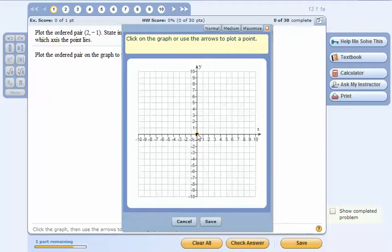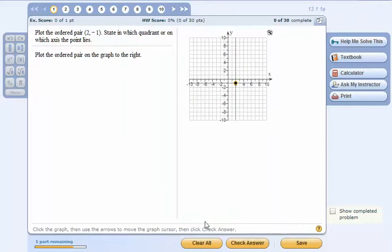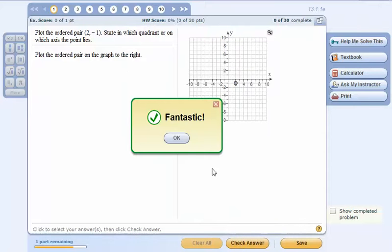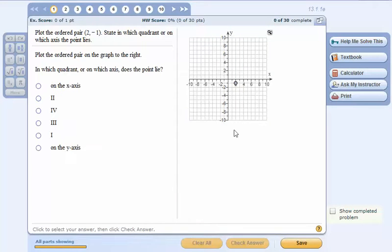So two negative one you would left click and then just drag this over to two and down to negative one and then let go. Once you've got it where you want it, come down here and click Save and then check and it'll tell you if you're right or not so you can move it around.